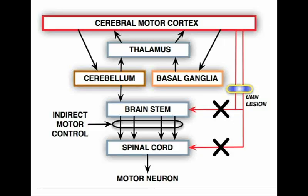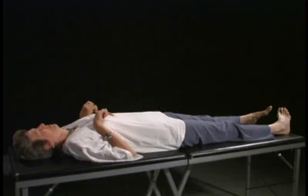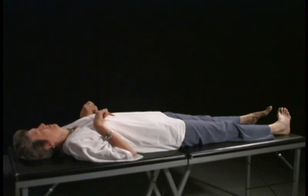Important points to remember. Number one: the upper motor neuron syndrome is a combination of loss of the direct corticospinal tract effect on the lower motor neuron and the loss of regulation of the indirect brainstem motor control centers. The patient is in the decorticate position with the upper extremities in flexion and the lower extremities in extension, reflecting that the brainstem motor centers are working, but without modulation of those centers from the corticospinal tracts and their connections to the brainstem centers.